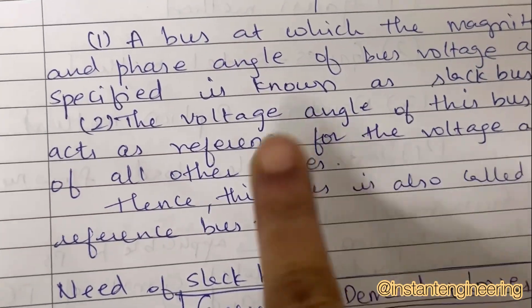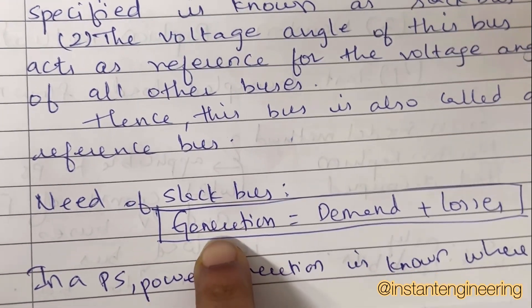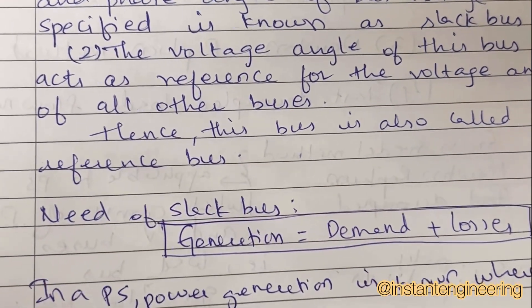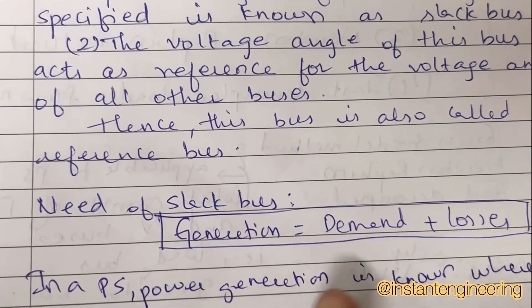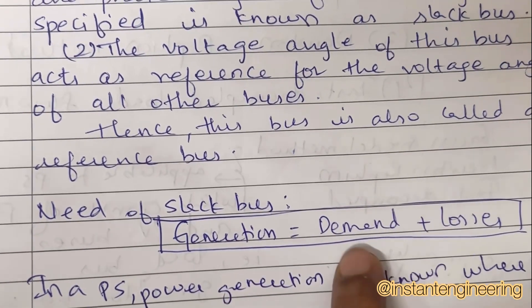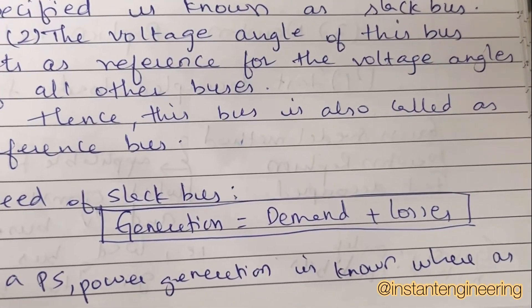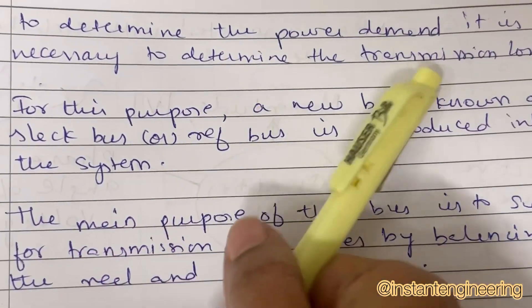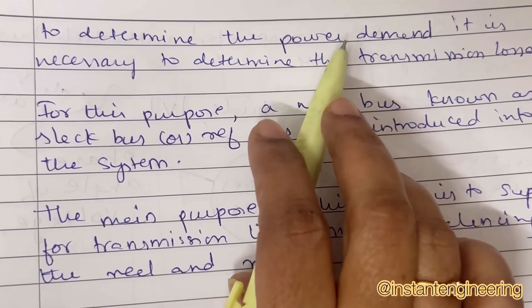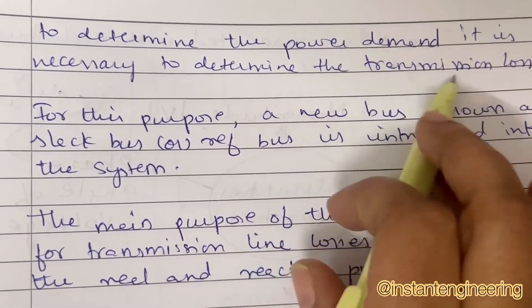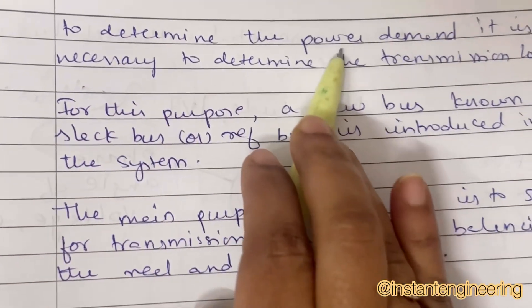Why do we need this slack bus? We have power generation based upon demand. There will also be some losses. Using the voltage reference, we can understand how much generation is needed based on demand and losses. Power generation equals demand plus losses. In a power system, power generation is known, but determining transmission losses helps us determine power generation requirements.